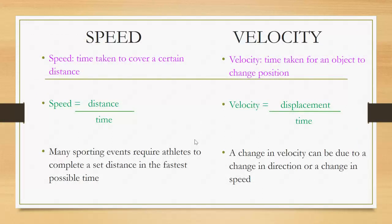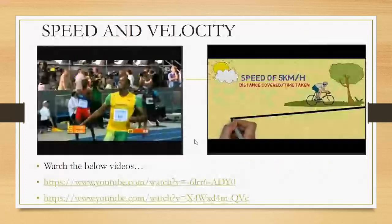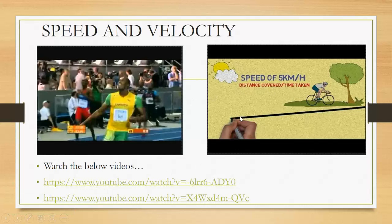Now let's look at speed versus velocity. Speed is the time taken to cover a certain distance, whereas velocity is the time taken for an object to change position. Both give you a value telling you how fast or slow something is moving, but how they get that value differs: speed equals total distance divided by time, while velocity equals displacement divided by time — just the starting point to the ending point.